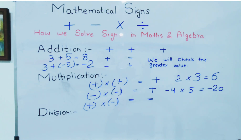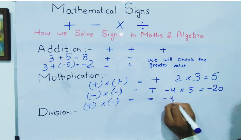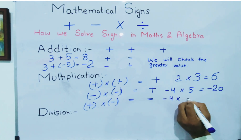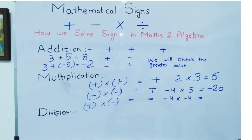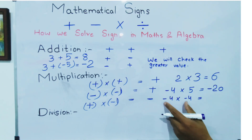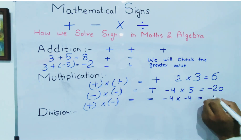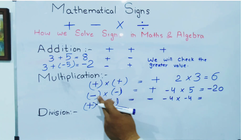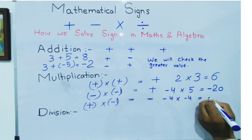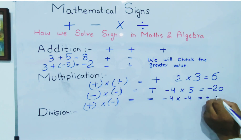Now suppose both values are negative, like minus four multiplied by minus four. As both signs are the same, minus and minus becomes plus, so four times four equals sixteen.